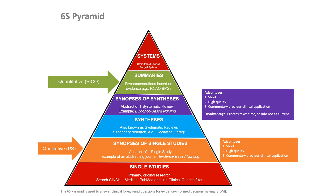This version of the 6S Pyramid recaps what we have discussed in this video, including brief notes and examples for each level of the pyramid, as well as advantages and disadvantages for the synopsis levels. Remember that when researching a quantitative PICO question, begin at the summaries level of the pyramid. When researching a qualitative PS question, begin at the synopsis of single studies level. This concludes this video tutorial introducing the six levels of the 6S Pyramid.